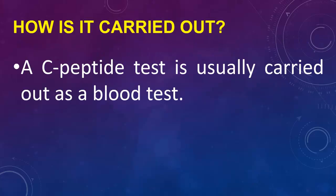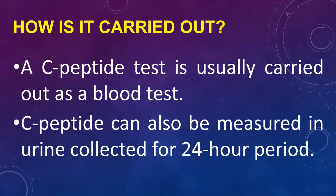How is the test carried out? A C-peptide test is usually carried out as a blood test. C-peptide can also be measured in urine collected over a 24-hour period.